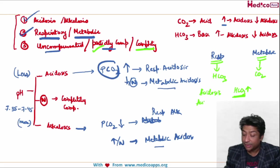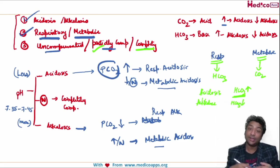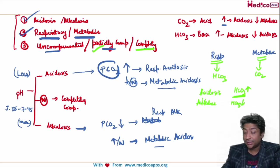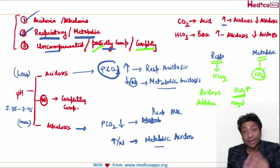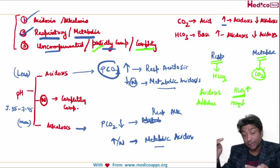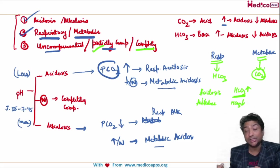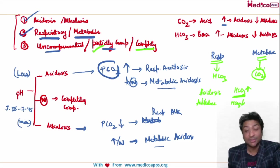Similarly, in respiratory alkalosis the bicarbonate level should come down. If the bicarbonate level is below normal it is partially compensated; if it is within normal it is uncompensated. For metabolic cases, the carbon dioxide will have to increase or decrease. In metabolic acidosis, carbon dioxide should come down. So if carbon dioxide is less than normal it is partially compensated; if it is normal it is uncompensated — and vice versa for metabolic alkalosis.